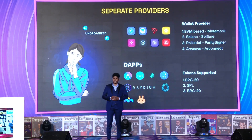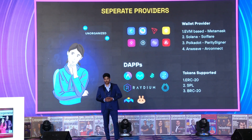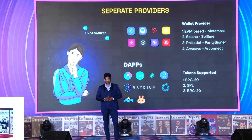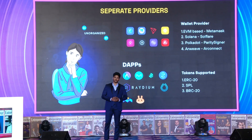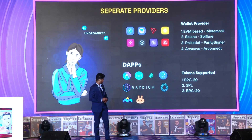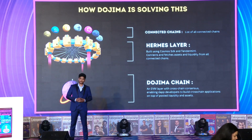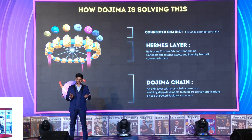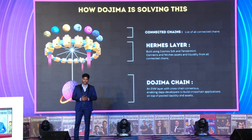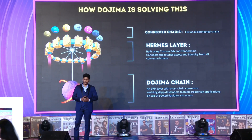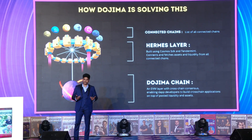There are a lot of chains available, each having its own token format, and users are required to use different providers to interact with each particular blockchain. This whole experience is making Web3 unorganized for both users and developers. Dojima Network is here to solve this — it is a cross-chain layer one connecting all the chains and pulling in assets and data onto a common middle ground, which is very helpful for the adoption efforts of all Web3 companies.